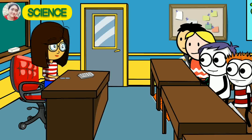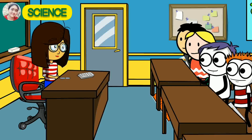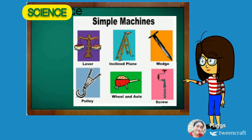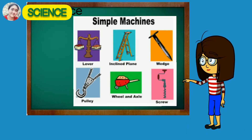Are light switches machines? Yes, of course! Door handles, light switches, bottle openers, tongs, knives, screwdrivers — all are examples of simple machines. In this chapter we shall learn about some simple machines which simplify our daily activities. The types of simple machines are: lever, inclined plane, wedge, pulley, wheel and axle, and screw.